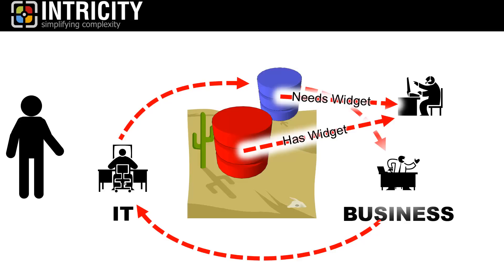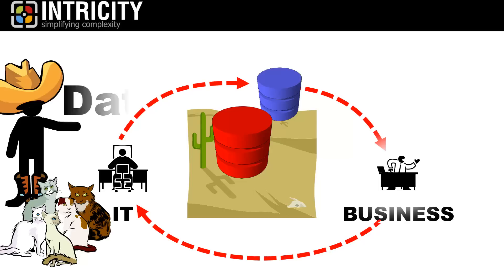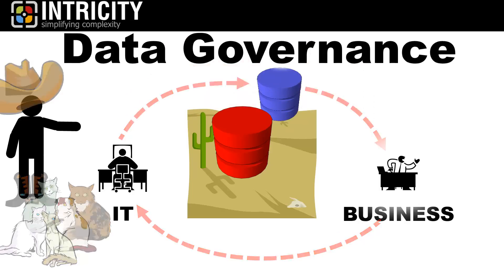Fixing this issue requires a cat herder. It requires somebody that can get a lot of people to do something they don't want to add to their busy schedules, which in this case is data governance. So in this video, we're going to talk about what a data governance program is and what roles people should have. A data governance program is something designed to help the organization tackle this no man's land head on.